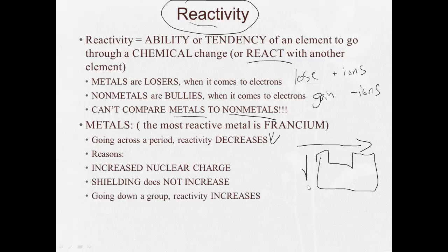Going down a group, the opposite. The reactivity tends to increase. Why? Because of the shielding. The nucleus isn't pulling on the electrons more. As we go down a group, it's pulling on them less because it's getting blocked by those inner electrons.